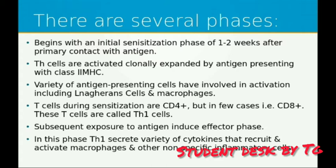The T cells involved in sensitization are mostly CD4 positive, though in some cases CD8 positive T cells are also involved. These CD4 positive T cells are called TH1 cells. Upon subsequent exposure to the same antigen, the sensitization phase ends and the effector phase begins.